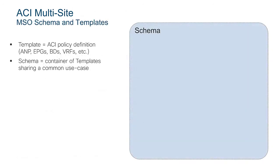How do we define tenant policies on the Multisite Orchestrator? Here we introduce the terms of schemas and templates. Schemas and templates are just constructs that allow you to create a hierarchy on how you define these policies. In reality, the policies are always defined in terms of objects you should already be familiar with from an ACI perspective — like EPGs, Application Network Profiles, Contracts, Bridge Domains, and VRFs.